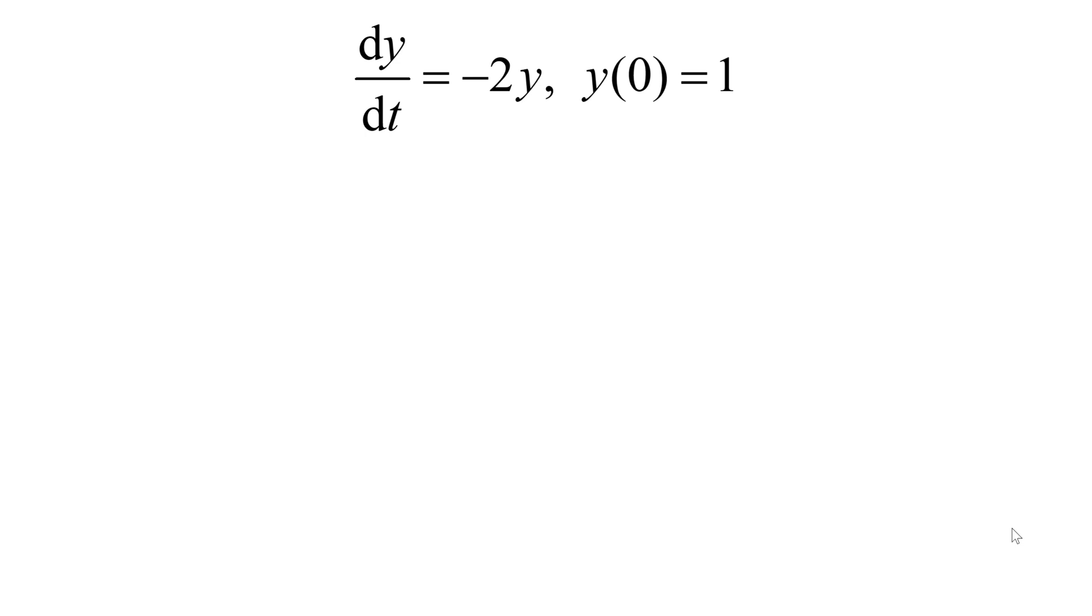Since this ODE is a separable equation, I can move all the terms related to y to the left-hand side, and all the terms related to t to the right-hand side. So, I have dy over y on the left-hand side and minus 2 dt on the right-hand side.